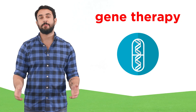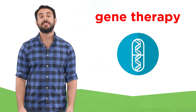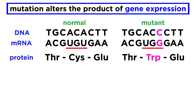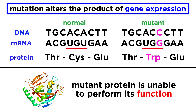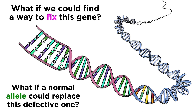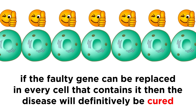This is a fascinating and promising area of study, so let's take a closer look now. There are a number of disorders that can be traced to a single defective gene. Some mutation has arisen which alters the product of gene expression, and the resulting protein does not perform its function as intended, which creates problems for that cell and by extension the organism. But what if we could fix this gene? What if a normal allele could take the place of this defective one? That would necessarily solve the problem for that cell, and if this could somehow be done for every cell that possesses the mutation, it would solve the problem for the organism, definitively curing the disease.